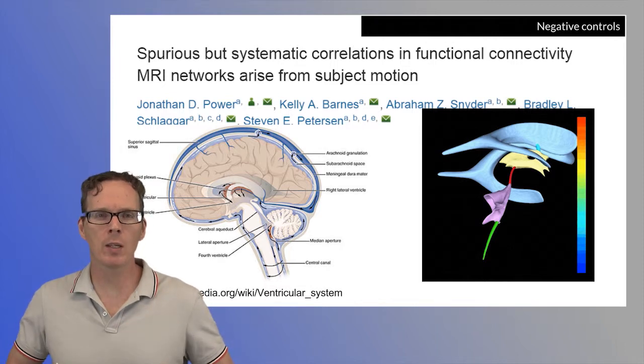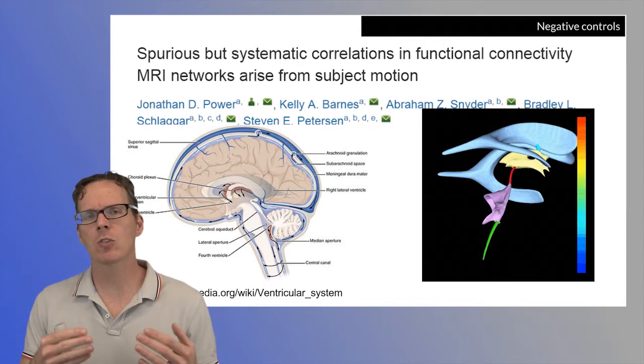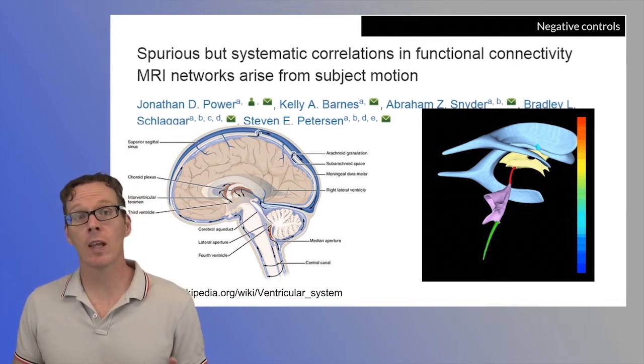It's also true that as we breathe and as our heartbeats, that changes the character of the signal dynamically, and those were also related to creating spurious correlations. The broader point, though, is that what these investigators did is they repeated an analysis that everyone was excited about—finding remote correlations in the brain that were putatively brain networks and understanding how they related to disease and such.